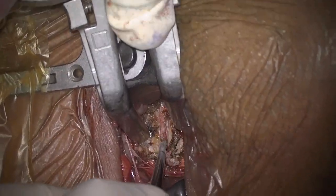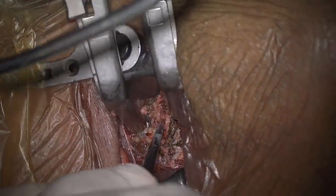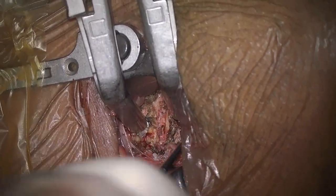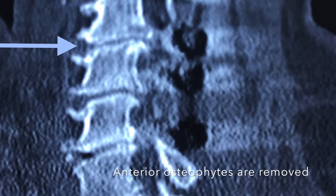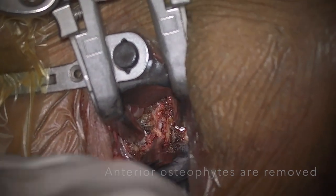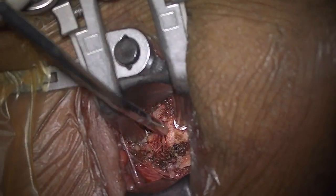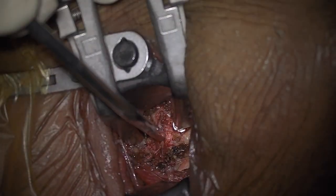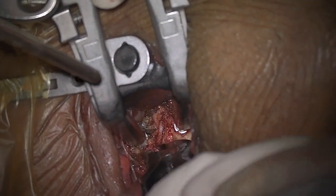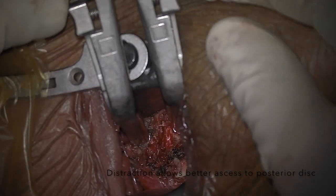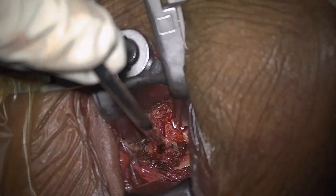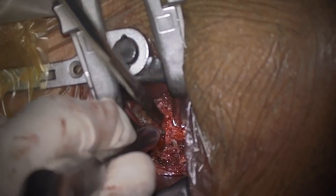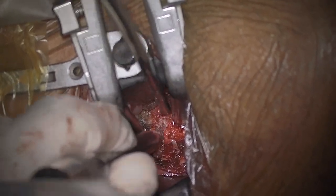Once the outer annulus has been cut, curettes can be used to remove the hard disc. In cases like this one, it is important to remove any anterior osteophyte, which can be pre-seen on the CT, because any anterior osteophyte will obscure your vision in order to reach the middle and inferior part of the disc. Once the osteophytes are removed, the disc space is distracted over the distractor pins.